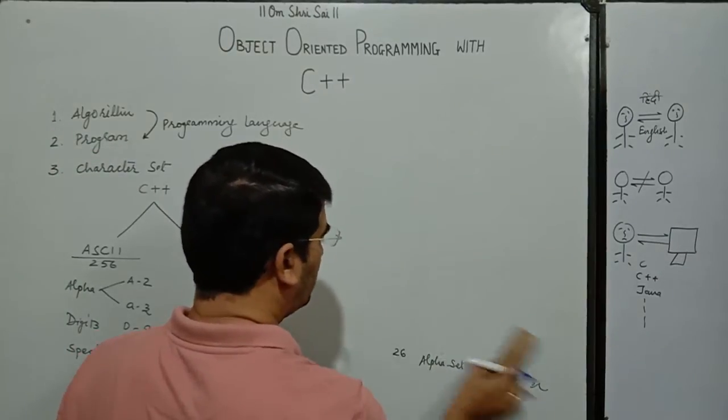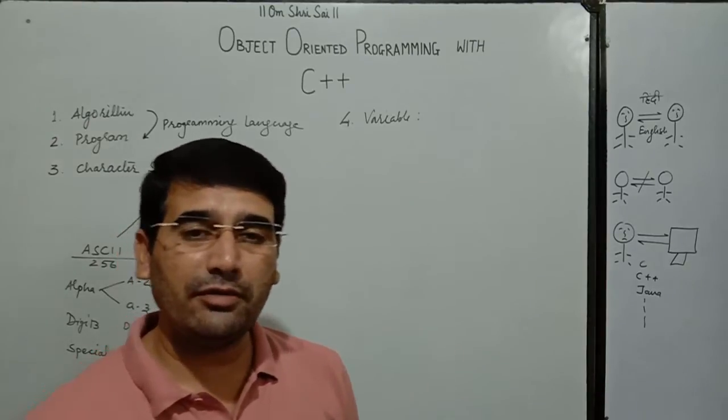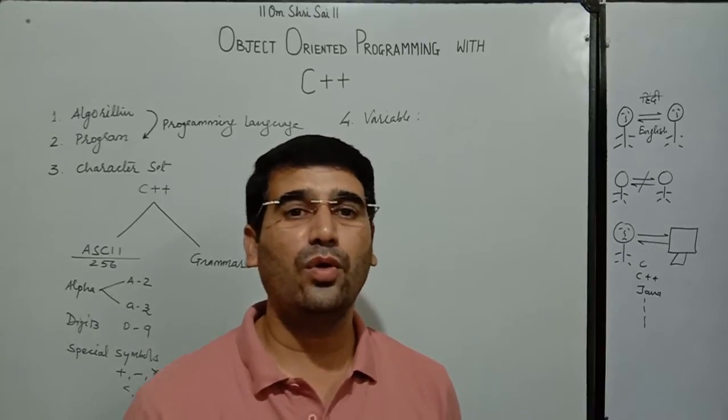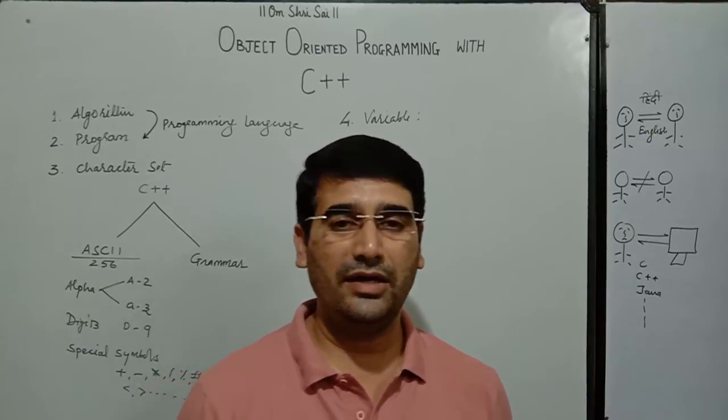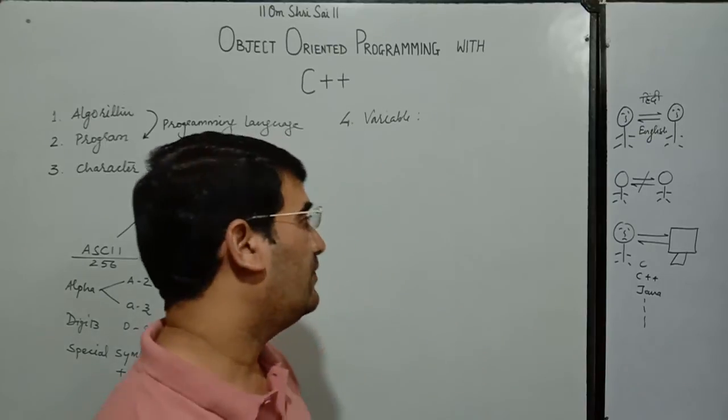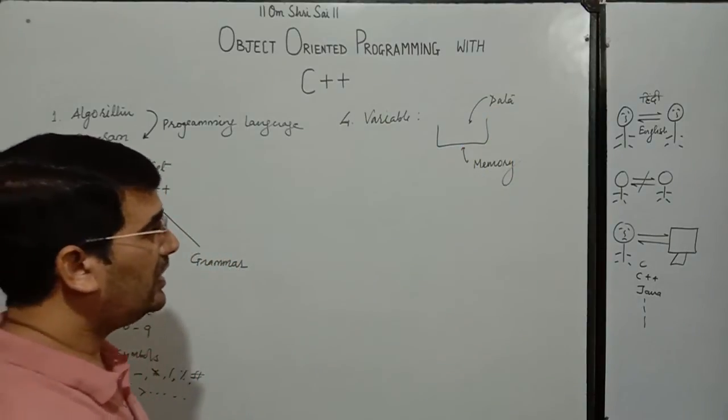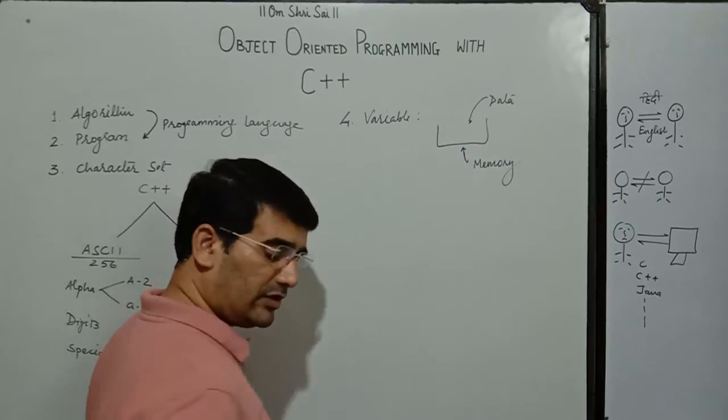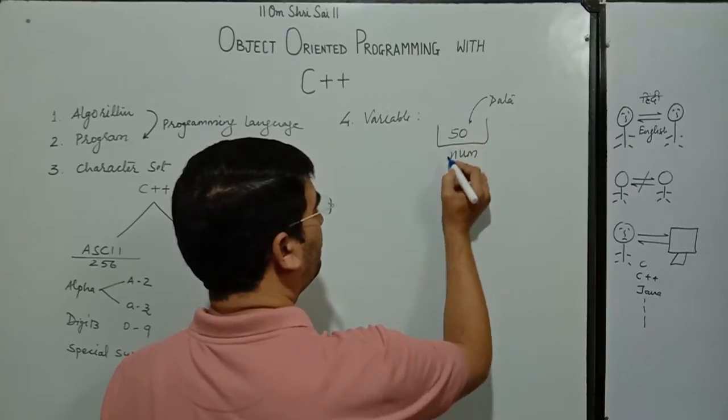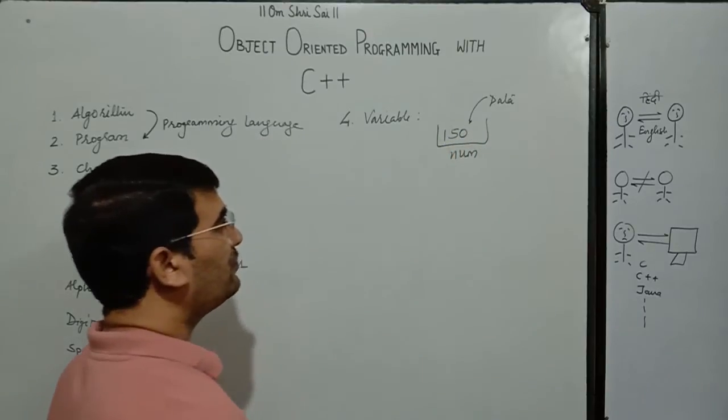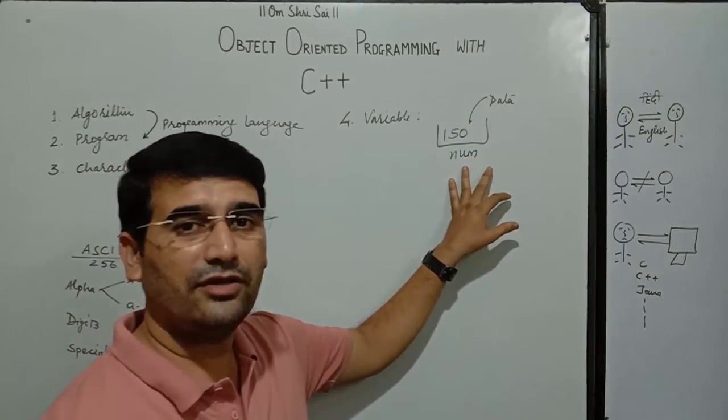Now, the another important term related to programming is the variable. Variable is actually a named memory location which is used to store or hold some data. But as the data which is stored in that memory location may vary and hence it is known as the variable. So, this is just a memory location which will hold the data. For example, if we take a variable with name as num, this may contain 5 or it may contain 50 or it may contain 150 and so on. So, the data which is stored in this memory location may vary and hence it is termed as the variable.